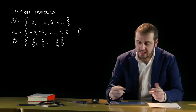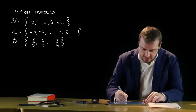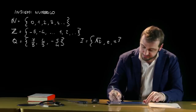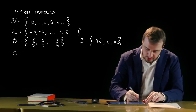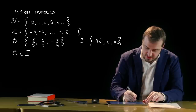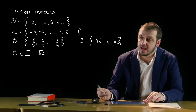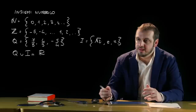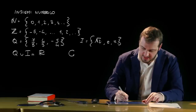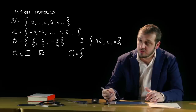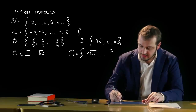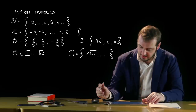Qualora questi numeri non possano essere rappresentati come rapporto di numeri interi, parleremo di numeri irrazionali, tra cui troviamo per esempio la radice di 2, il numero di Nepero o il pi greco. L'unione dei numeri razionali e irrazionali costituisce l'insieme dei numeri reali. Esiste anche l'insieme dei numeri complessi, all'interno dei quali trovano risposta termini del tipo radice di -1, ossia termini che contengono la radice di indice pari di quantità negative.